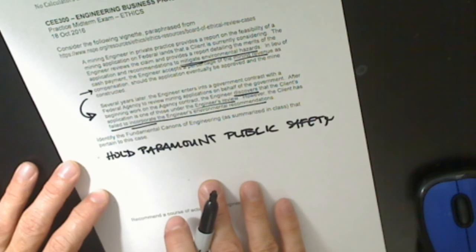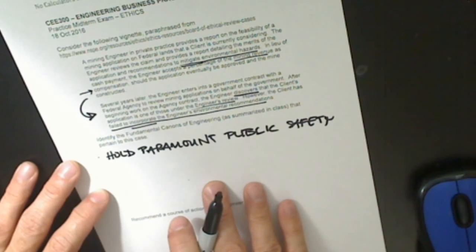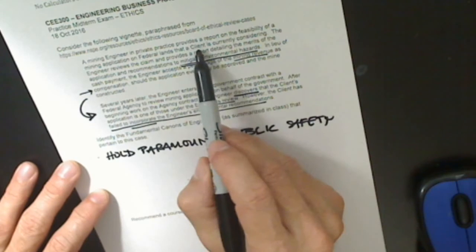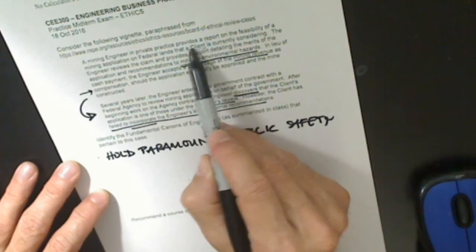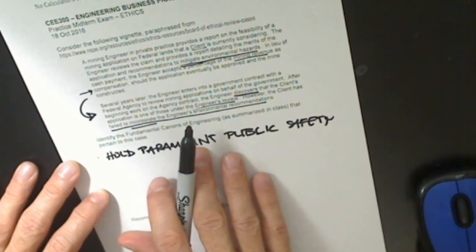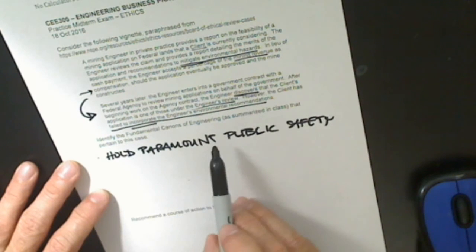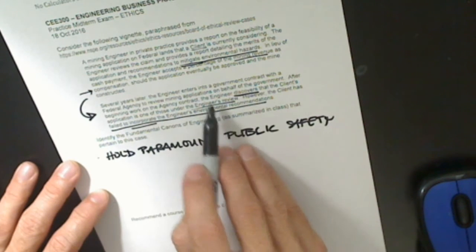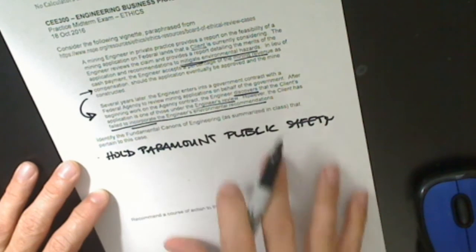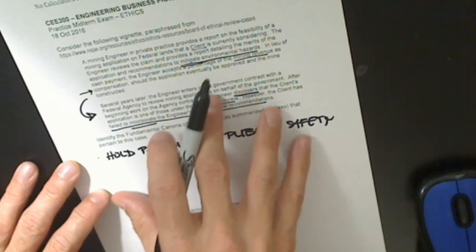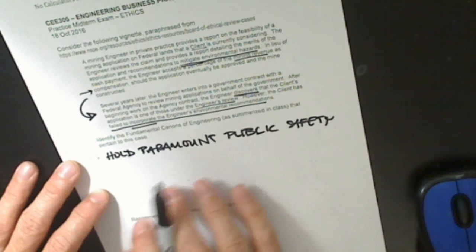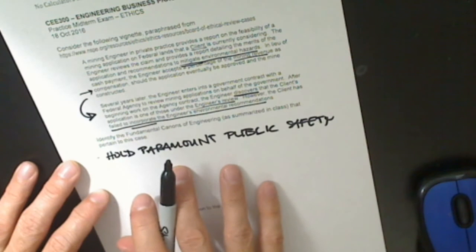Issue public statements only in an objective and truthful manner. There are no statements to the public here. The first report the engineer did was for a private client and is not a public report. The second is to the federal government, and while it could be discovered under the Freedom of Information Act, it's written for technical experts and bureaucrats evaluating the application — not meant for public release. So I don't see how the public statements canon applies.